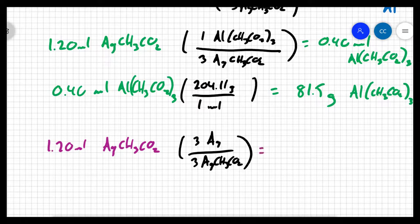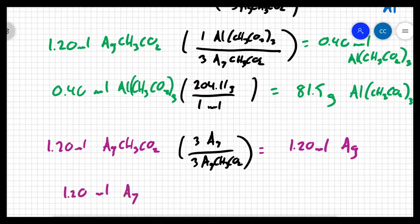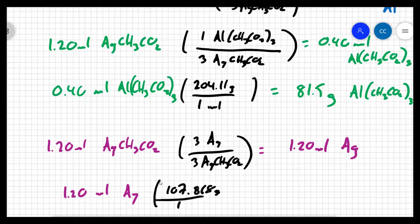And like before, they didn't want the moles of product. They wanted the mass of product. So 1.2 moles of silver, I can multiply by the molar mass, which for silver is 107.868 grams per mole. I'm getting 129 grams of silver.